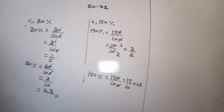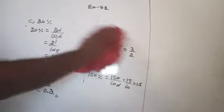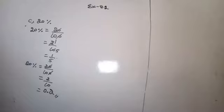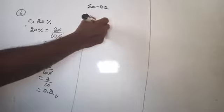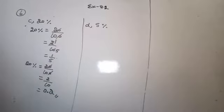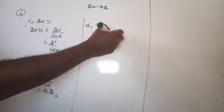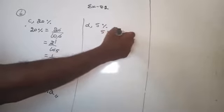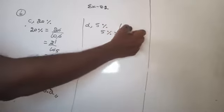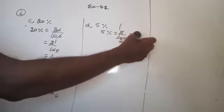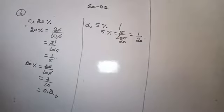The fourth part: 5% is given. Express into fraction as well as decimal form. 5% can be written as 5/100, because 1% is 1/100. Reduce into the lowest form: 1 five is 5, and 20 fives are 100, which is equal to 1/20. So we express into fraction and also reduce into the lowest form.